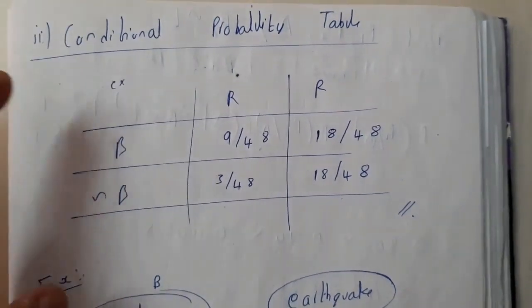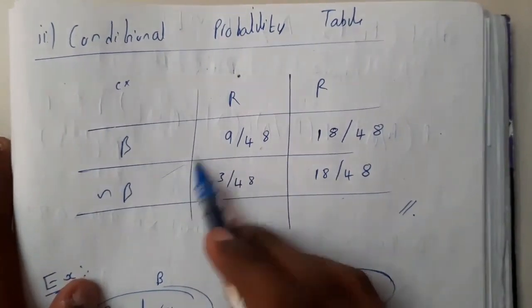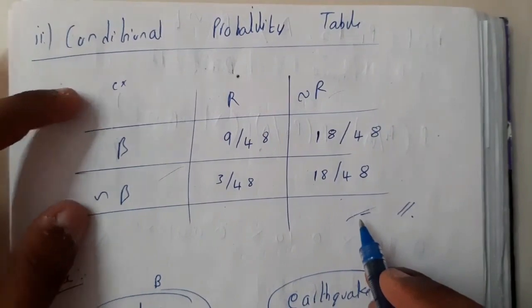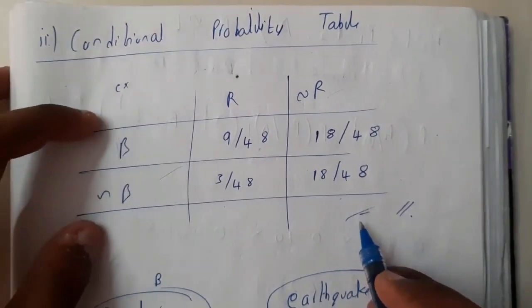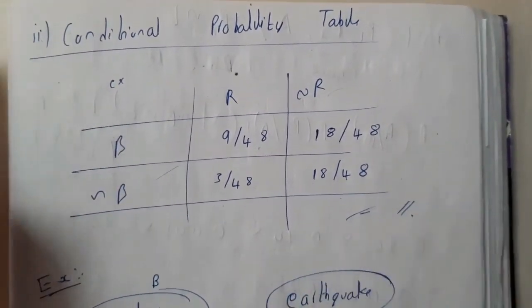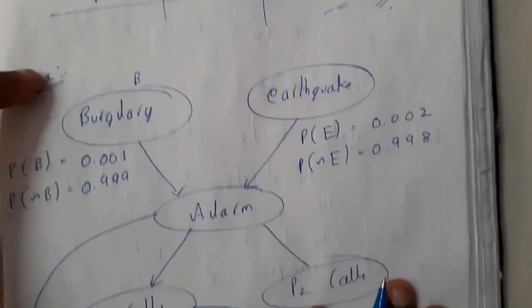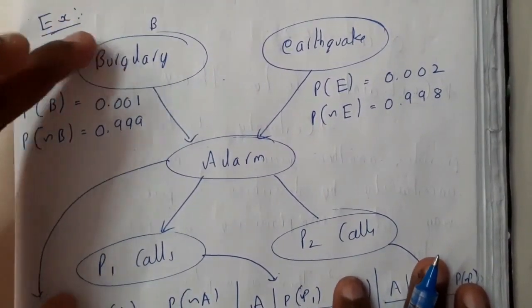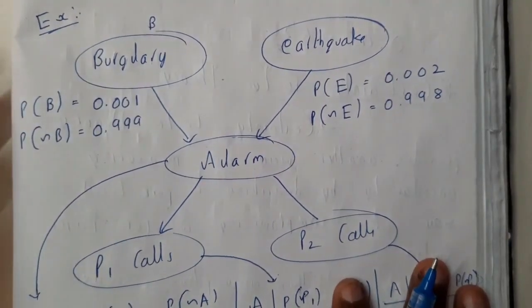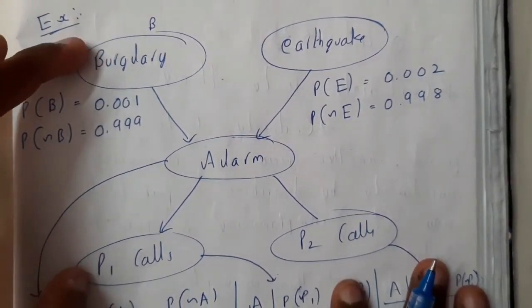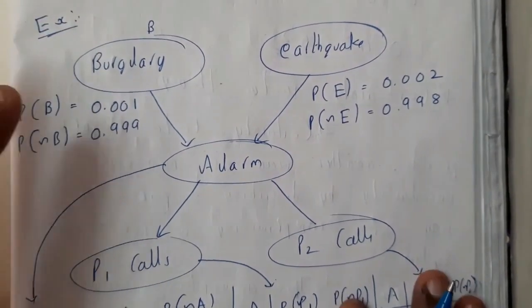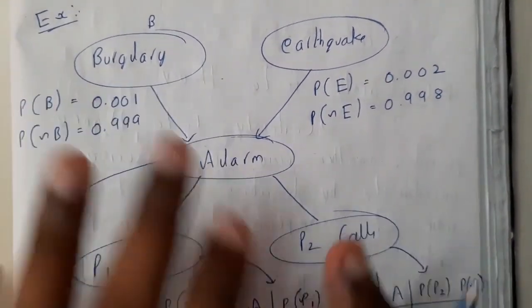This can also be in the form of a tabular representation: bark/not bark, rain/not rain. These are just assumption values. Don't think about how I got these values. Whenever you search for a BBN example online, you'll get this as a result because this is the most common example.